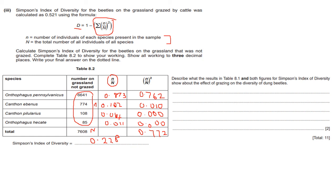And here it just says describe what the results and both figures for Simpson's index of diversity show about the effect of grazing on the diversity of dung beetles. So remember, on grazed grassland the value was 0.521. And on ungrazed land, which is the one we have calculated, so land that's not grazed where cattle don't feed, the value is 0.228. So definitely the one for grazed land is higher. So you can then say that grazing has an impact on the diversity of dung beetles and diversity is higher in land that is grazed by cattle compared to land that is not grazed by cattle.